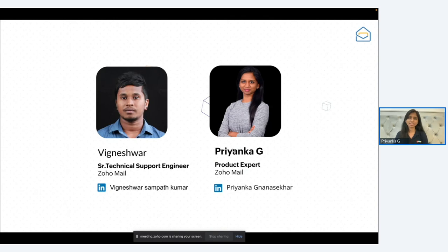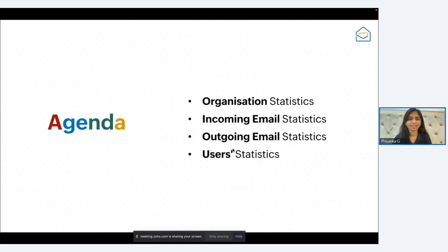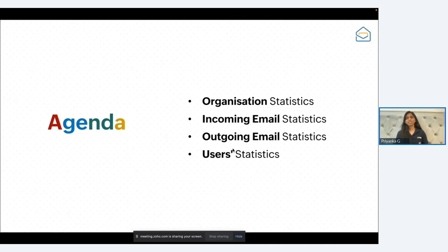The agenda for today: we will be seeing statistics specific to your organization — incoming emails, outgoing emails, and users. When you see these specific statistics and learn to analyze them, you'll be able to infer a lot of information about email communication and its management techniques. These statistics will give you that knowledge, and I'm going to teach you how to easily understand them.